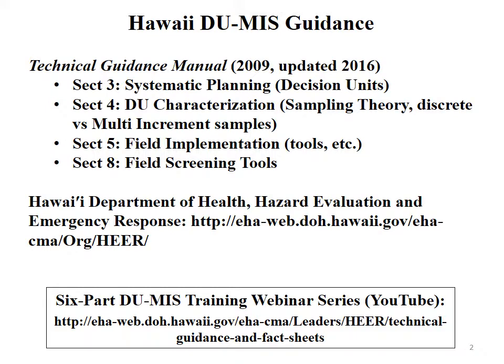Some quick references: this is the Hawaii DU-MIS guidance, which I'll be using throughout the webinar — the Technical Guidance Manual, first published in 2009 and updated in 2016. Sections 3, 4, 5, and 8 focus on field and site investigations, specifically soil and sediment sampling. Section 3 discusses systematic planning for site investigation with a focus on decision units, which we'll discuss especially in part two of this series.